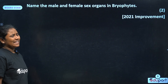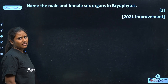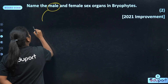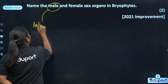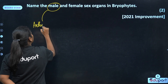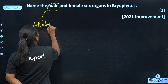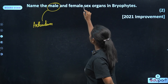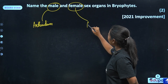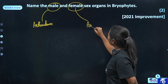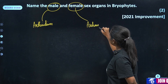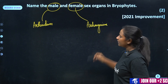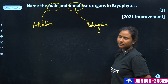Name the male and female sex organs in Bryophytes. The male sex organ is Antheridium. The female sex organ is Archegonium.